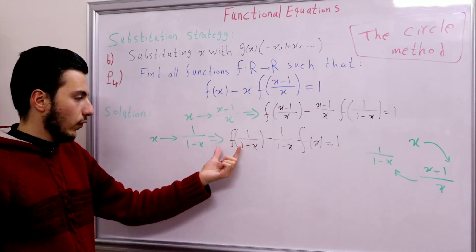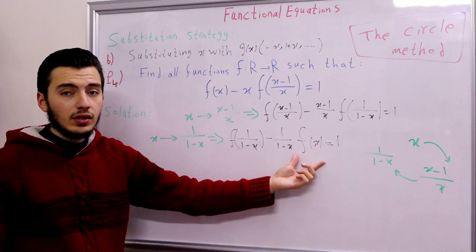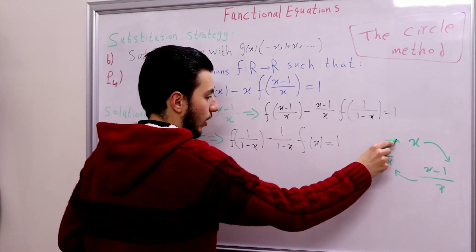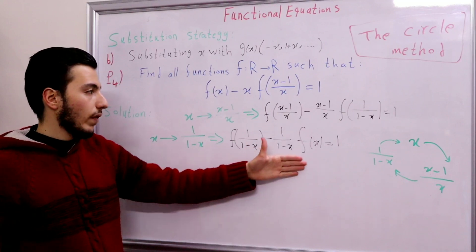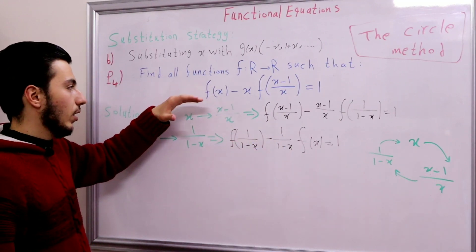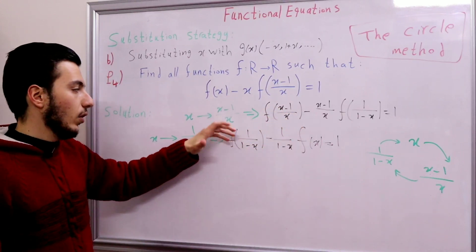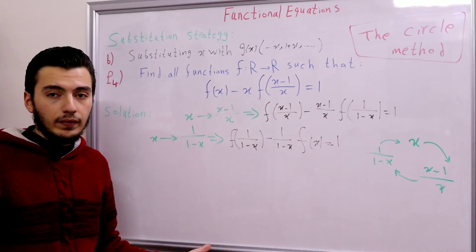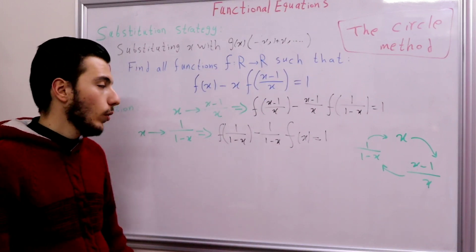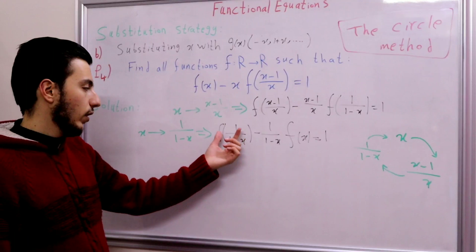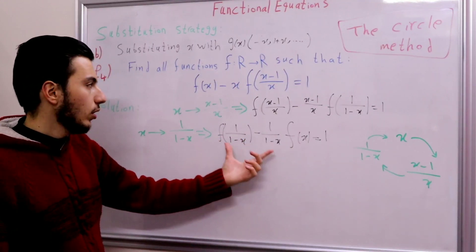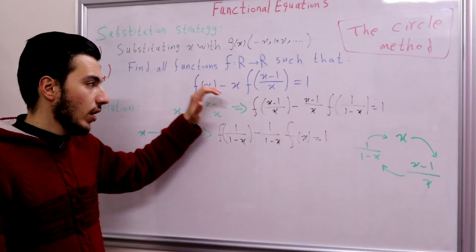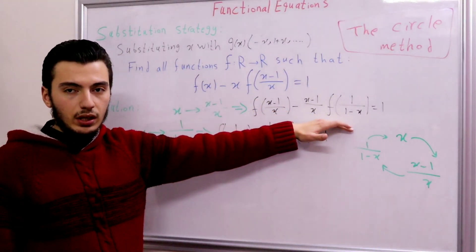Now we can see that f(1 over 1 minus x) is linked back to f(x). We have created our circle: 1 over 1 minus x is indeed linked to x. Now we have a system of three linear equations containing f(x), f(x minus 1 over x), and f(1 over 1 minus x). We can solve these three equations to find the value of f. We will express f(1 over 1 minus x) using f(x) from the third equation, find f(x minus 1 over x) from the first equation, and substitute everything into the second equation.